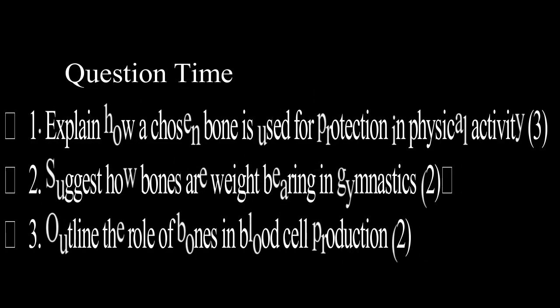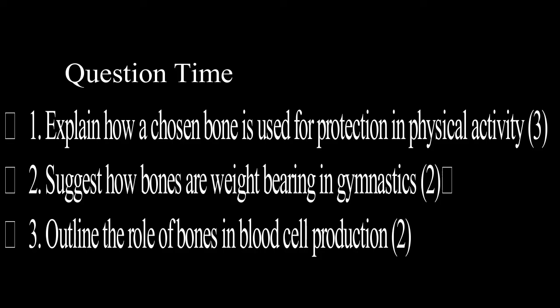Here are the answers. Number one — explain how a chosen bone is used for protection in physical activity. Think about any bone; let's take the cranium. The cranium helps to protect the brain from injury. If we're playing rugby and were to fall on our head, the cranium acts as a shock absorber for the brain to allow more protection. Number two — suggest how bones are weight bearing in gymnastics. The bones in the wrists are extremely strong and thick so they can take the weight of the gymnast during headstands, handstands, cartwheels, or anything similar.